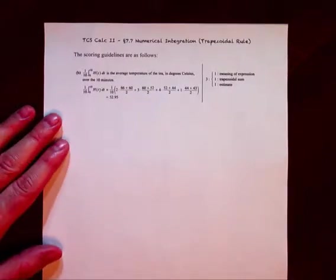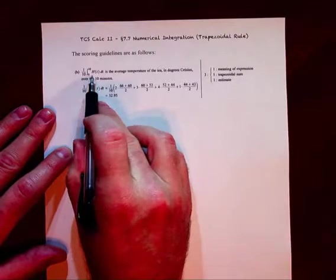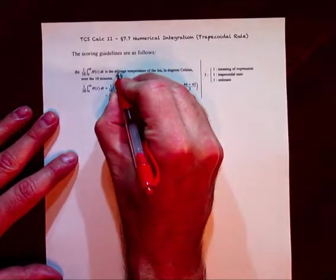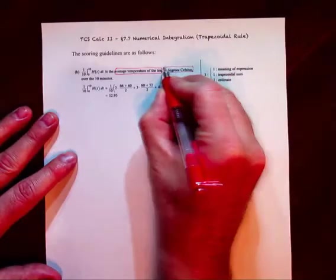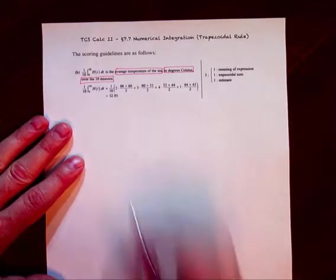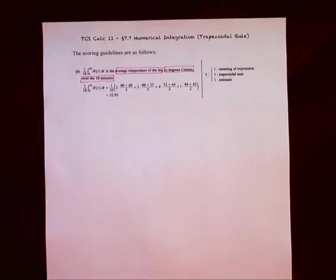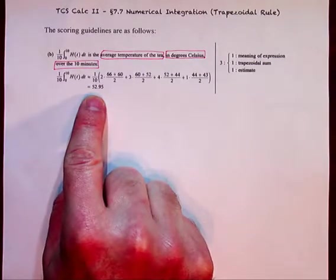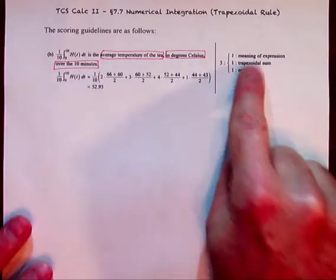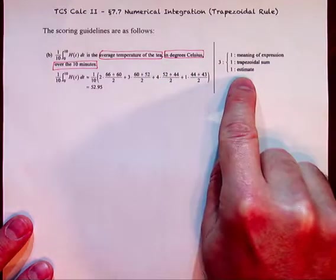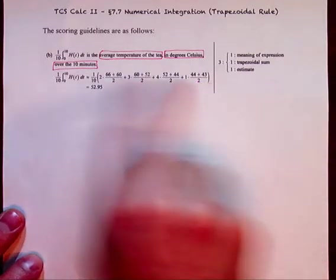Just in case you care, here are the AP scoring guidelines for this question. The first point requires stating it's the average temperature of the teapot in degrees Celsius over the 10 minutes — all three pieces must be there. The second point is for setting up the trapezoidal sum correctly, and the third is for the correct calculation. We got 52.95, which matches the scoring guidelines exactly.